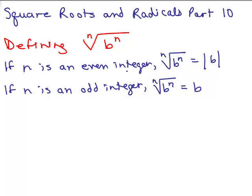If n is an even integer, then the nth root of b to the n equals the absolute value of b. This ensures that the answer will be a non-negative number. If n is an odd integer, the nth root of b to the n is b.